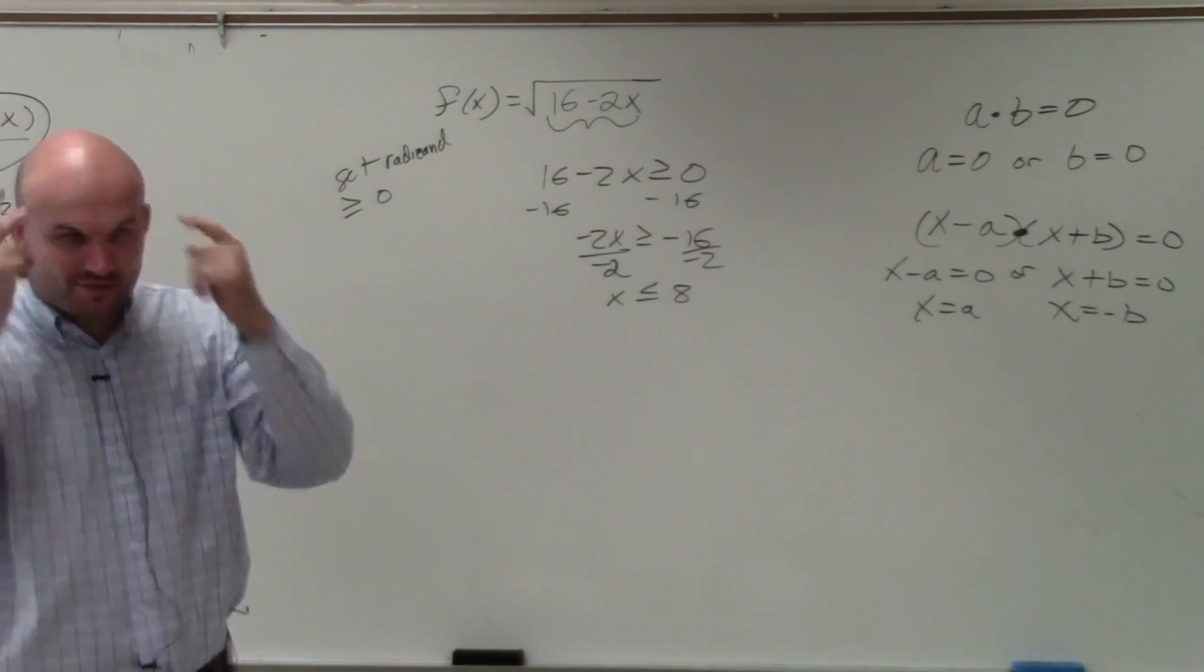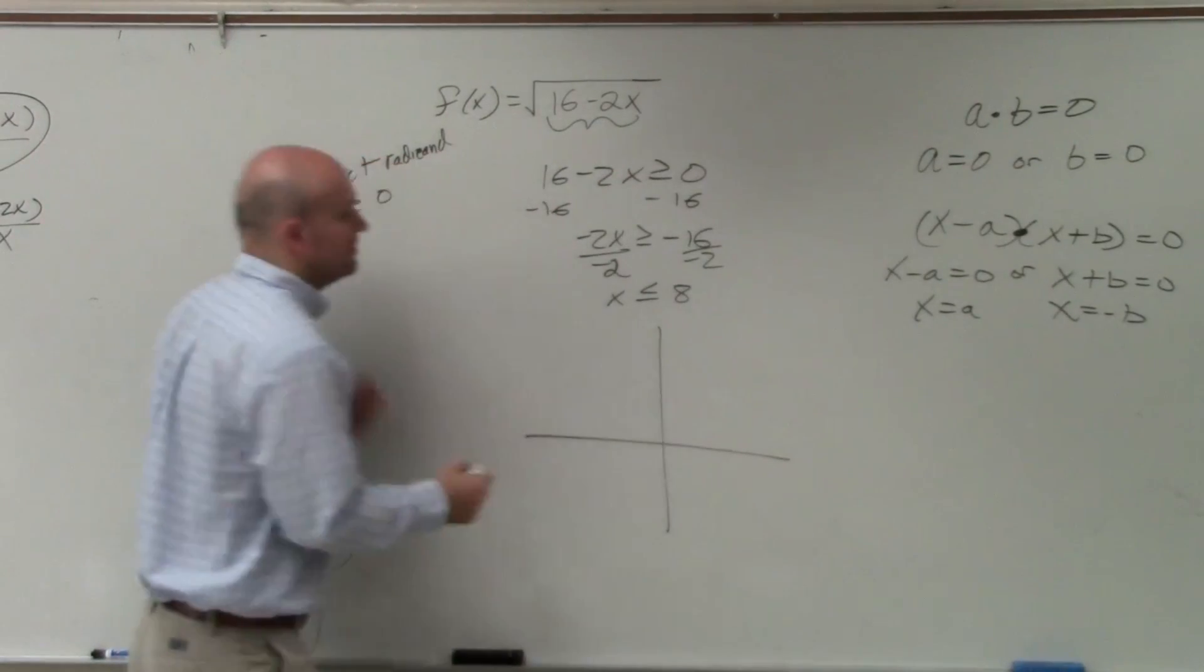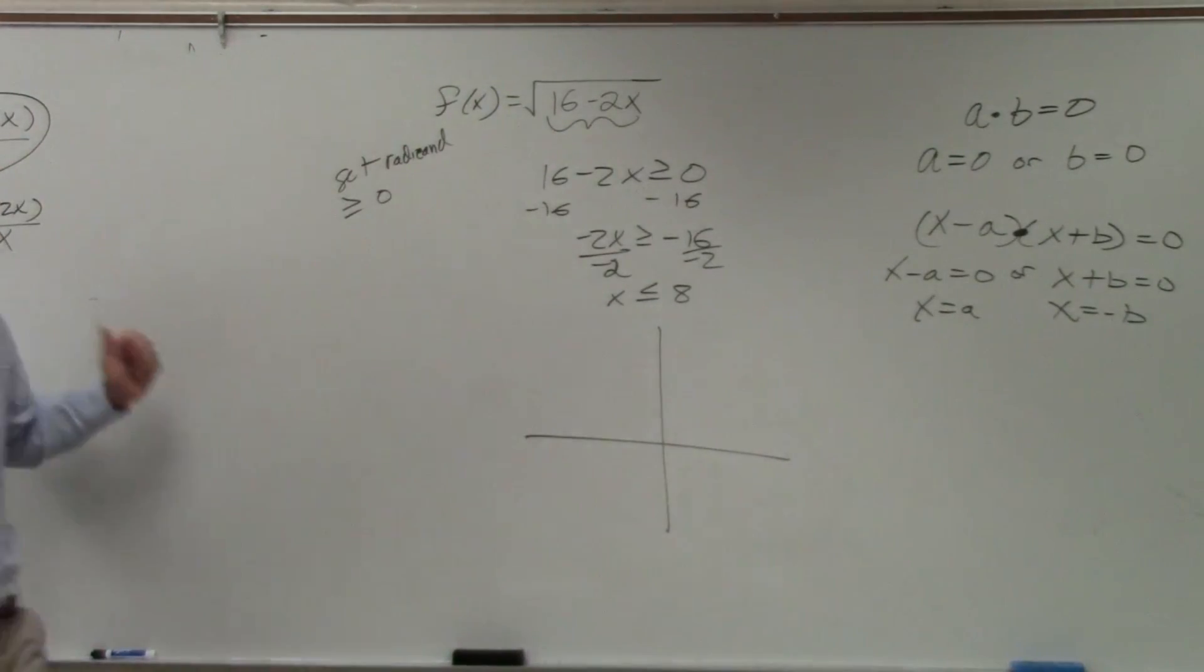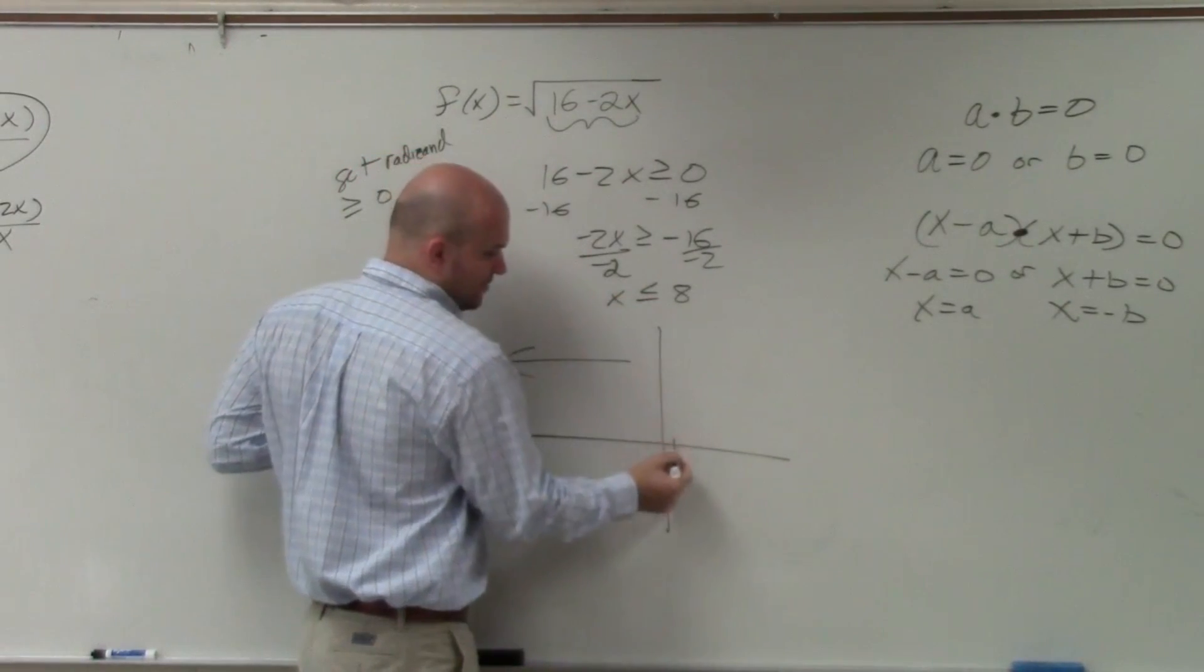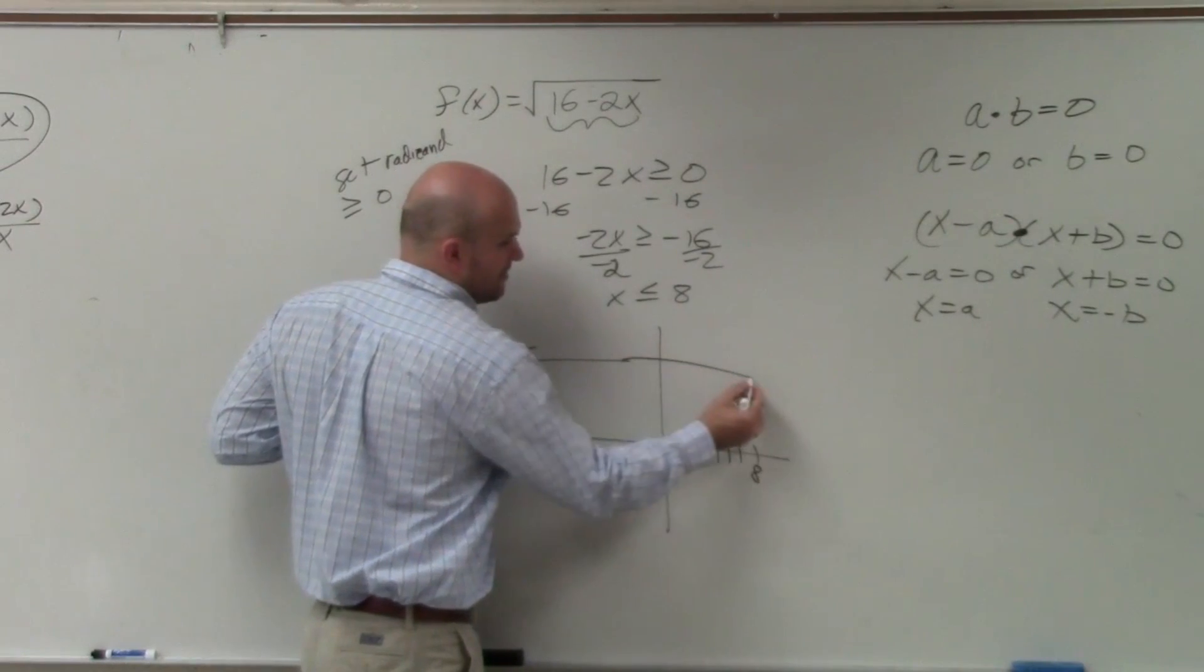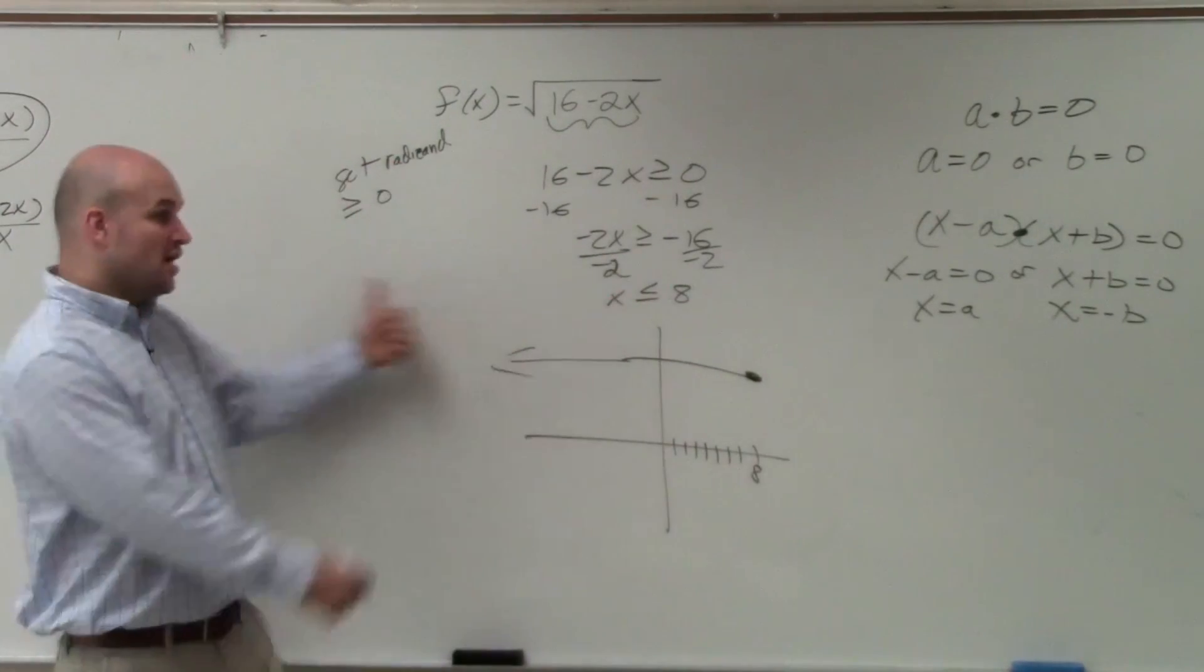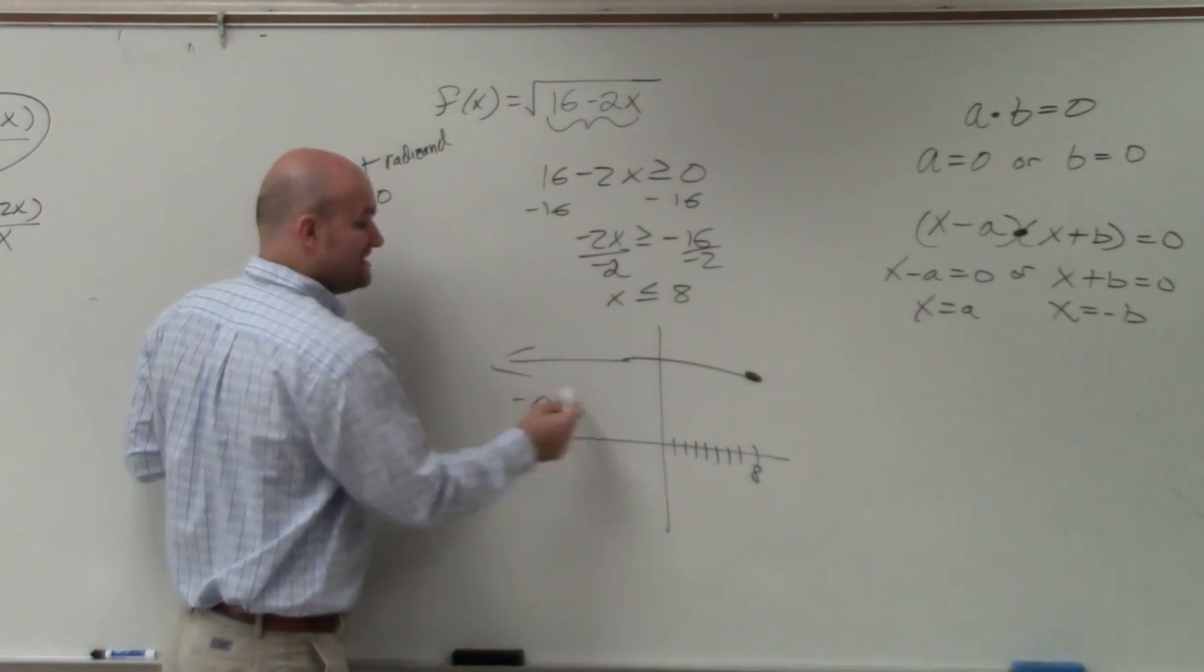So, x has to be less than or equal to 8. Before we write the domain, let's think about this graphically. x has to be less than 8, right? So, is there any restriction on how small x can be? No. So, it's going to be going somewhere all the way over here, right? But then, it's going to go all the way to 8. 1, 2, 3, 4, 5, 6, 7, 8. But it's going to stop. It can't go past 8, right? It can't be greater than 8.